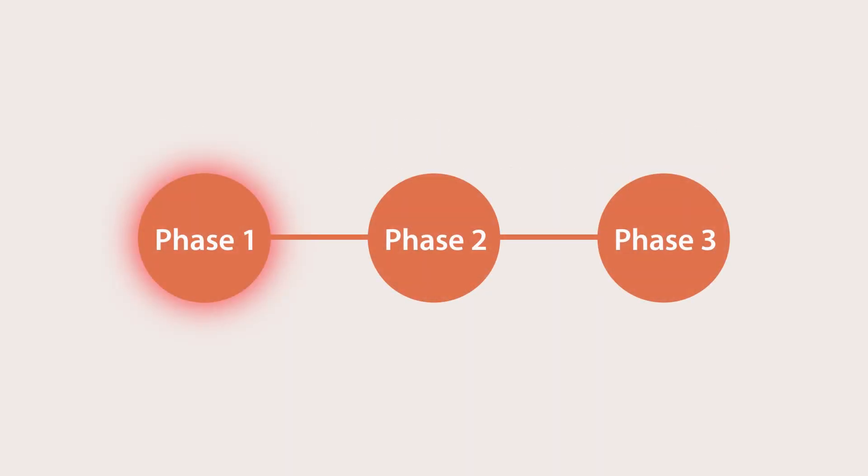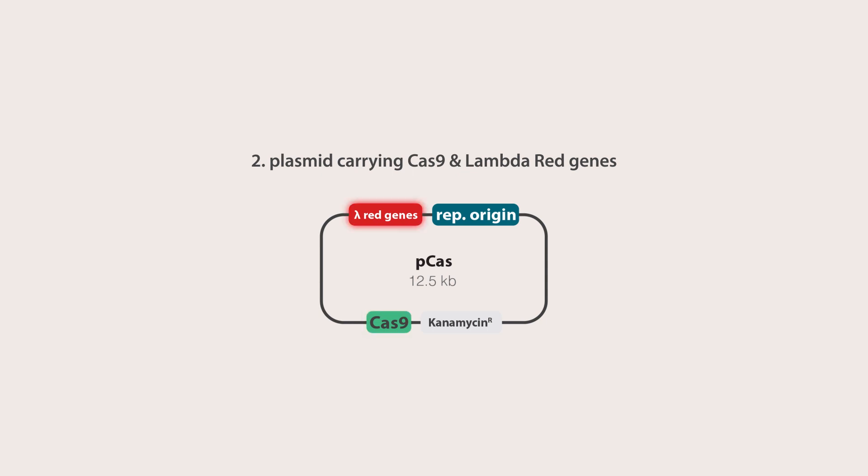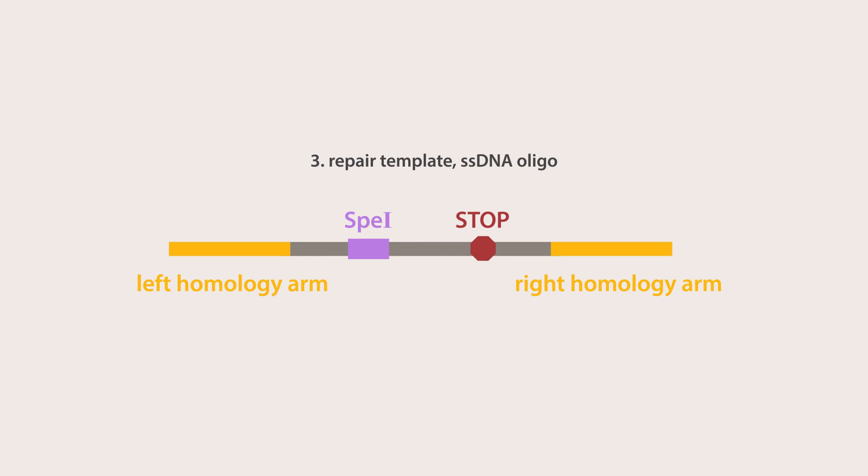In Phase 1, three components are prepared for CRISPR gene editing in E. coli. One, a plasmid with the sgRNA. Two, a plasmid carrying Cas9 and the lambda red genes. And three, the repair template.